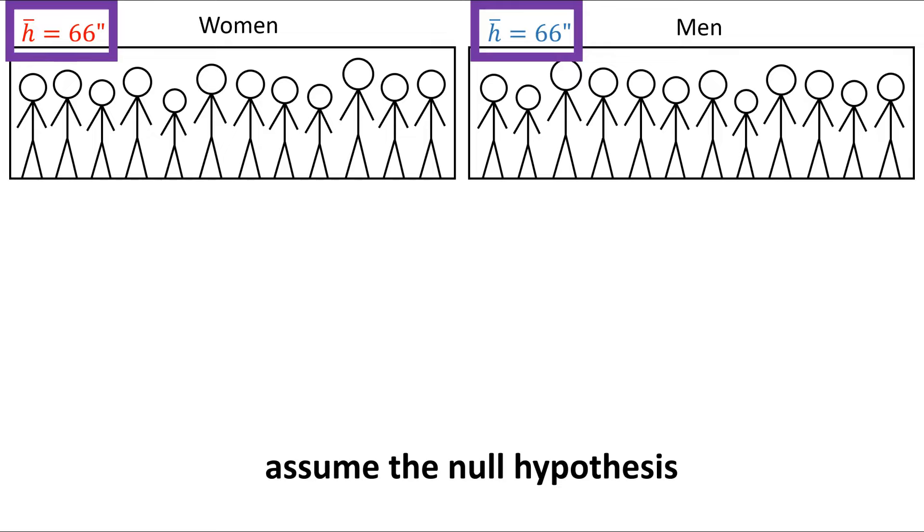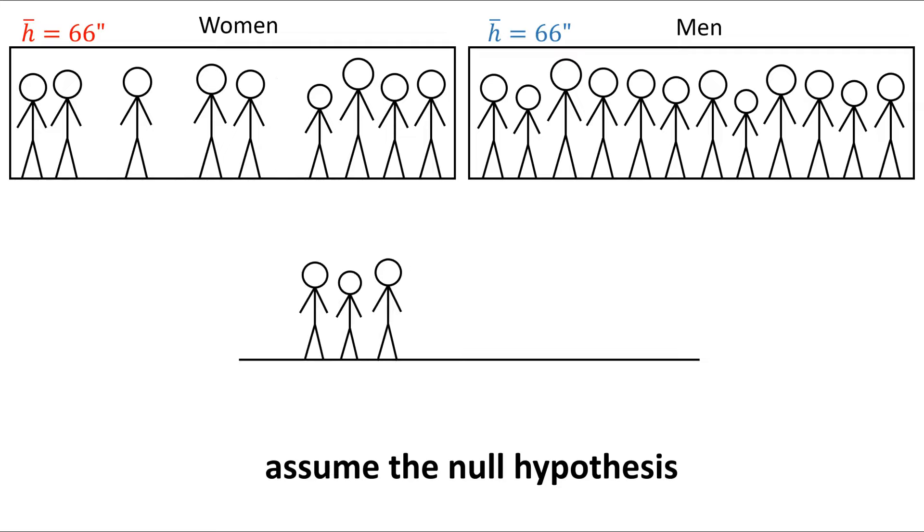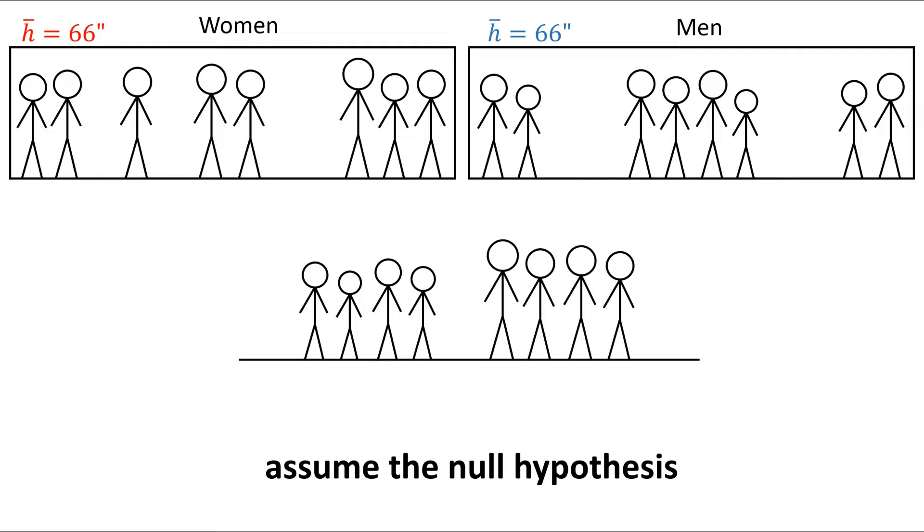The problem is that your data was based on random samples. So when you sampled the women, maybe it just so happened that you selected the shortest women. And when you sampled the men, maybe you randomly picked the tallest men. So that 4 inch height difference that you found? That was just random chance.